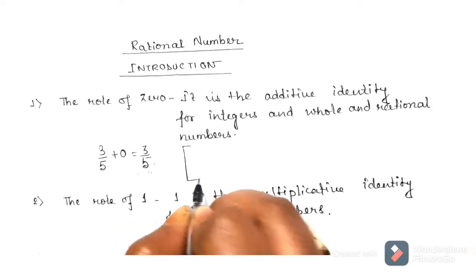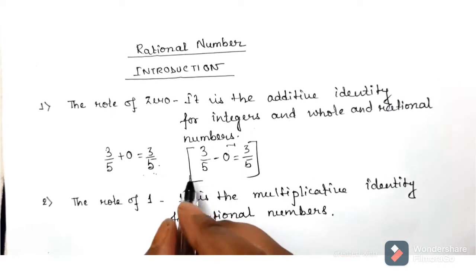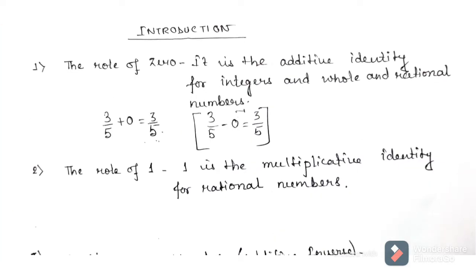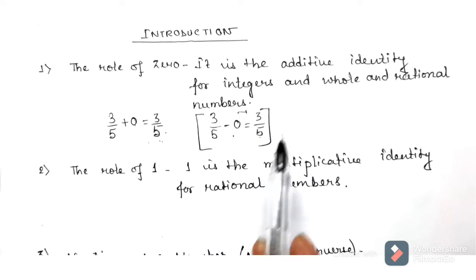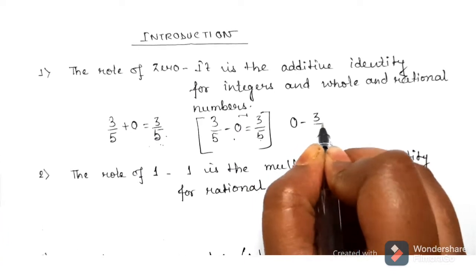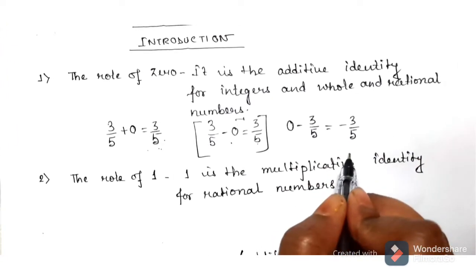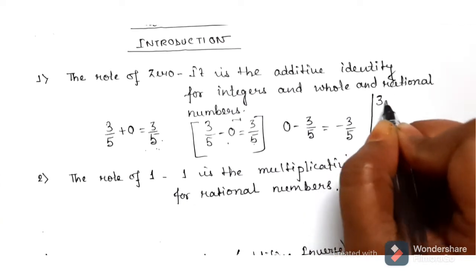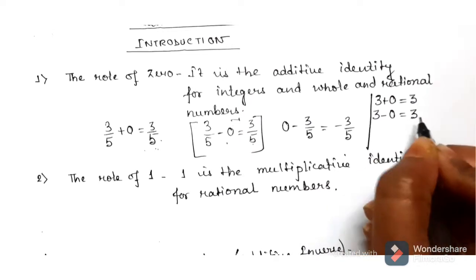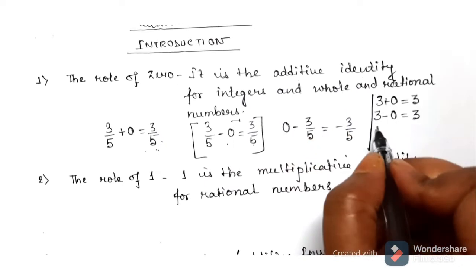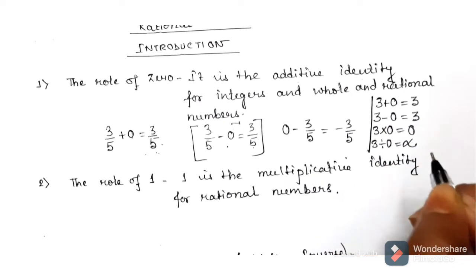If we subtract 0 from a number, we get the same number. However, if we subtract any rational number from 0, we don't get that number — we get its negative, meaning we get minus 3 by 5. So, adding 0 or subtracting 0 from any number gives the same number. That's why 0 is called the additive identity. And if we multiply any number by 0, we get 0. If we divide by 0, we get infinity or undefined.